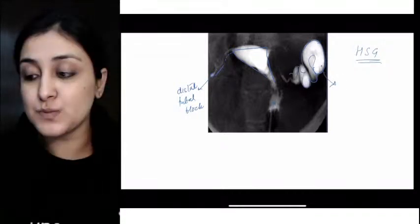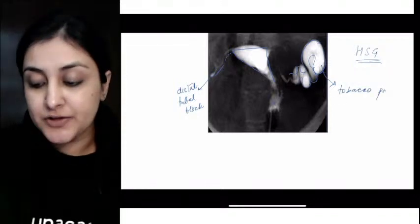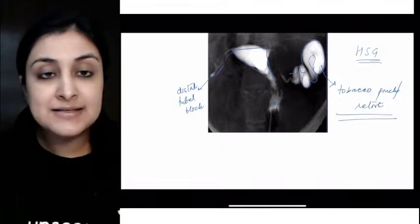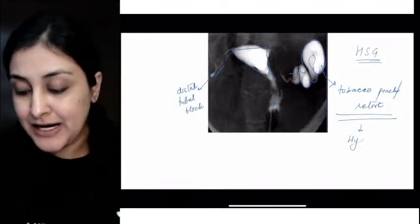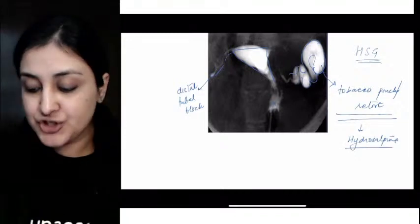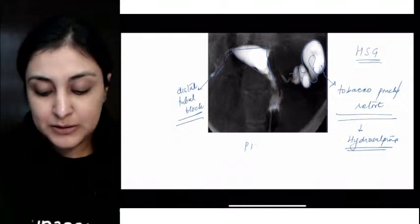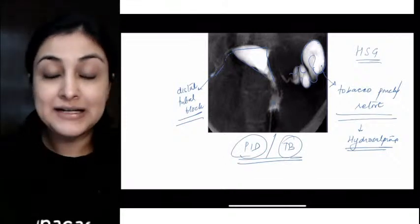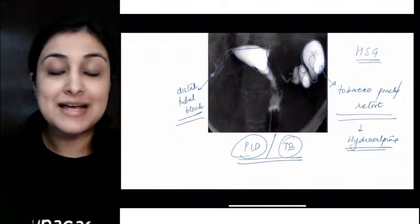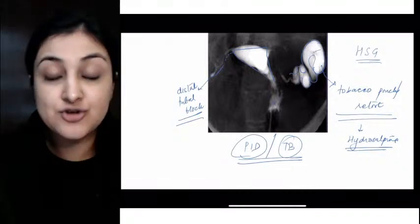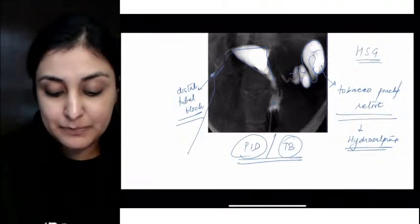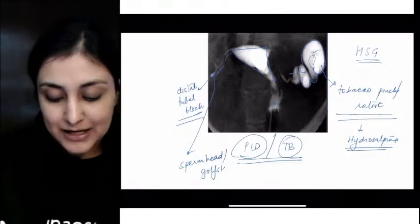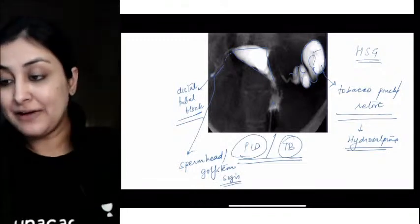Both of these conditions are seen with what disease? This can be seen with PID, pelvic inflammatory disease, or it can be seen with tuberculosis more commonly in our country. TB and PID are the two possibilities that we consider when there are bilateral tubal blocks, there is hydrosalpinx, tubal block here. Some people think it looks like a sperm, sperm head appearance, golf club appearance. Such signs will always come your way. Is this clear?